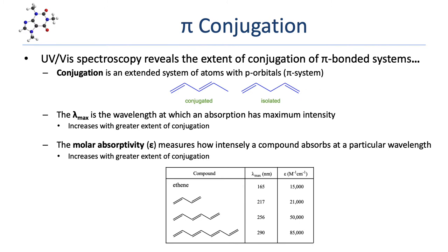Every absorption in a UV-Vis spectrum will have a lambda max, which is the wavelength of the most intense absorption for that particular excitation. As shown in this table, lambda max increases with an increase in the extent of conjugation. The more atoms with p-orbitals you have in a row, the higher the lambda max. A molecule with a short pi system like ethene will have a very short lambda max, while 1,3-butadiene, which has four contiguous atoms with p-orbitals, has a lambda max of 217 nanometers.